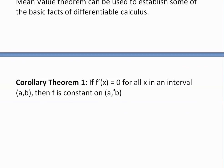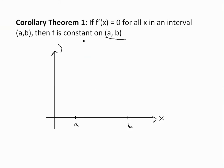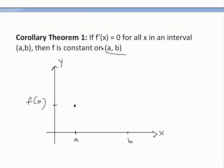Corollary Theorem 1 states: if f'(x) equals 0 for all x in interval (a, b), then f is constant on [a, b]. A good way to understand this theorem is to draw it. Basically, if we start at a to b and f(a) is at some point, if the derivative is 0 it's going to be a horizontal line. This is a visual kind of proof — if it's going to be horizontal, then the whole function is going to be constant.